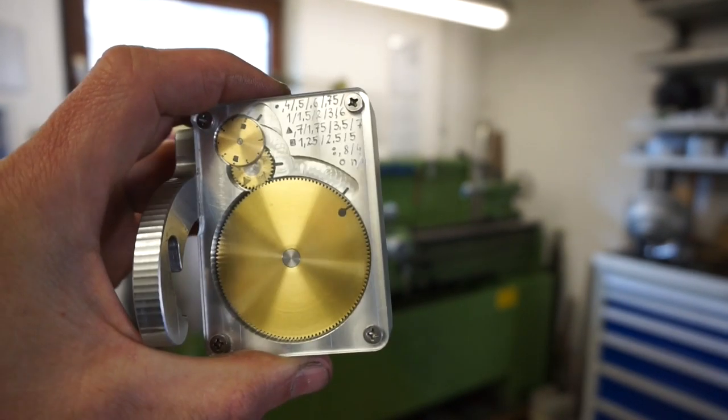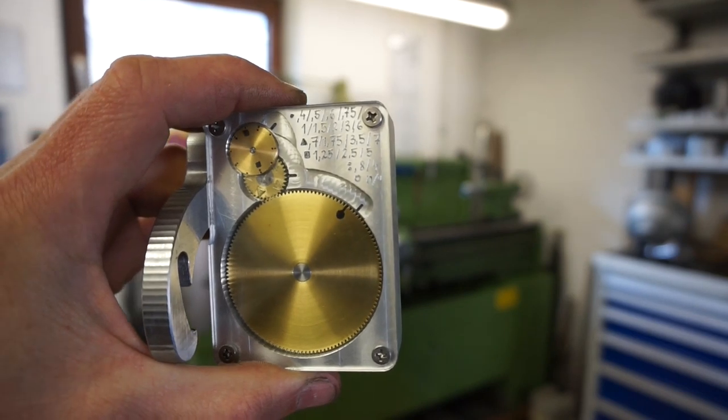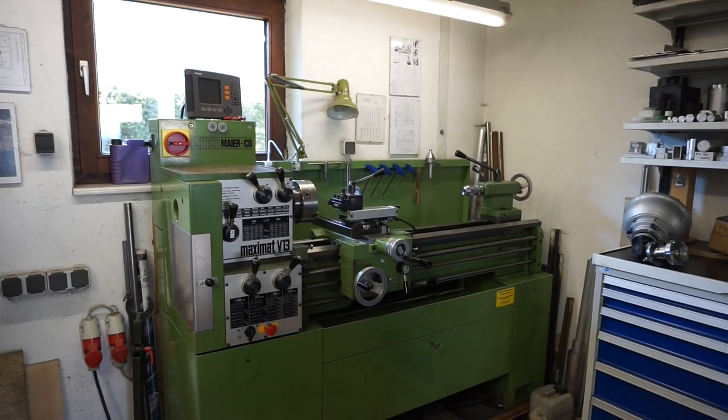Also in this video I will say a few things about the threading dial indicator theory, particularly I'll try to point out the differences between its use with metric and imperial pitch lead screws and threads.